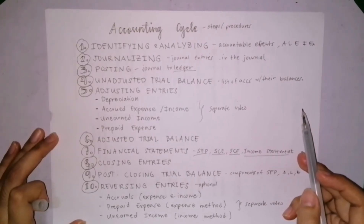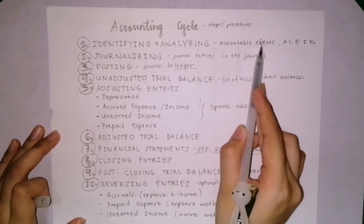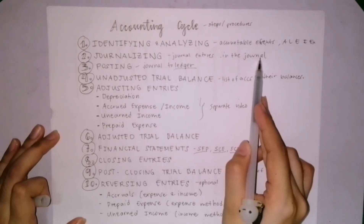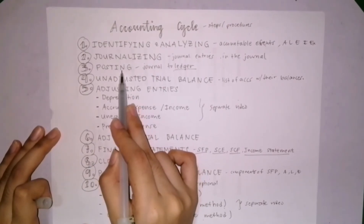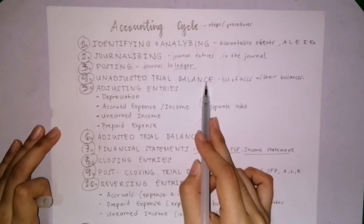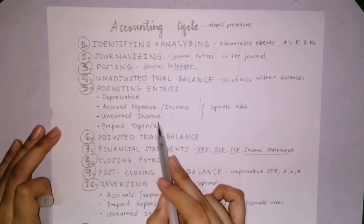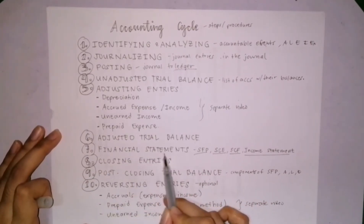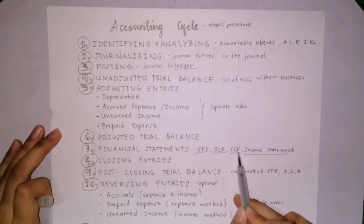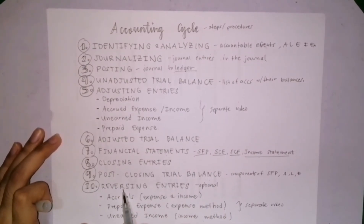Let us go back to the very first step of the accounting cycle. Step 1 is identifying and analyzing accountable events. Step 2 is journalizing into the journal. Step 3 is posting to the general ledger. Step 4 is the unadjusted trial balance. Step 5 is adjusting entries — we have 4 types. Step 6 is the adjusted trial balance. Step 7 is preparation of financial statements: SFP, SCE, SCF, and income statement. Step 8 is closing entries. Step 9 is the post-closing trial balance. And lastly, Step 10 is the preparation of reversing entries.